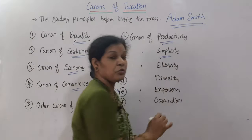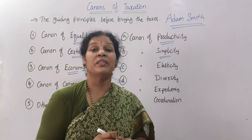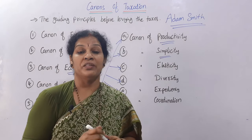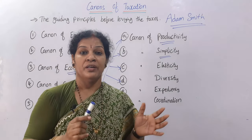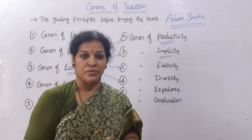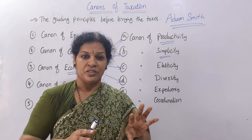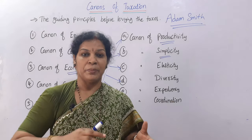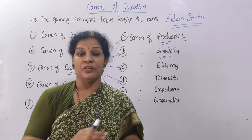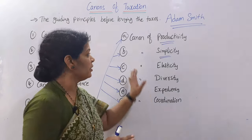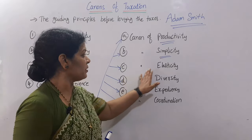The canon of simplicity states that whatever tax is collected, the method should be very simple and easy. It should not create too many problems or demand excessive attention. The methodology should not be so lengthy that people are unable to understand it — it should be simple.